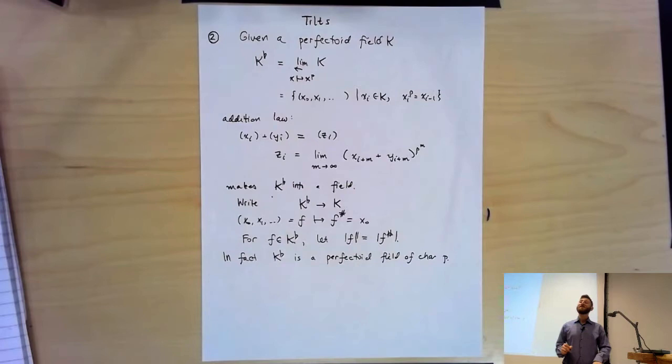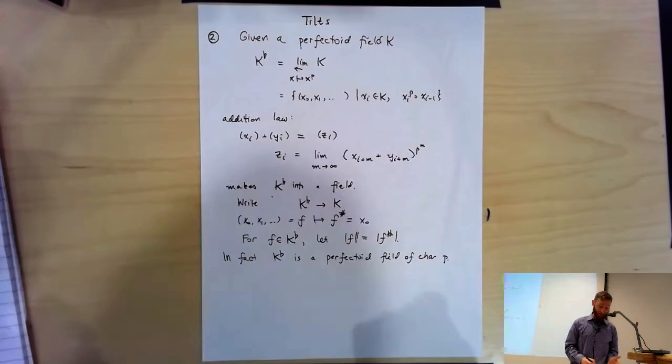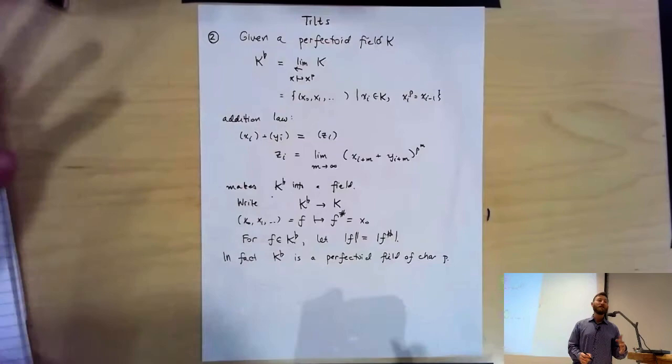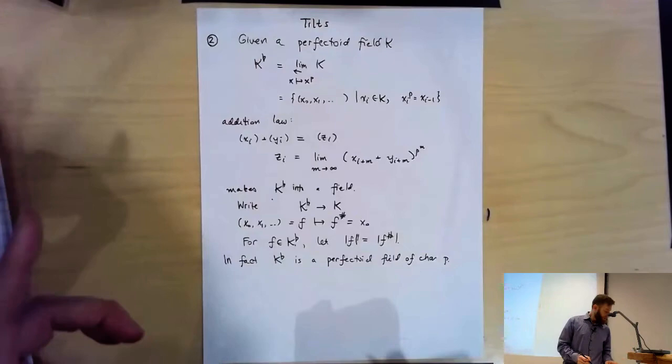If you haven't done this exercise before, it's really fantastic. It's not so clear that this ring satisfies the ring axioms, but in fact it does. The most efficient way to see that is not to define K-tilt this way, but rather to do a slight variation.